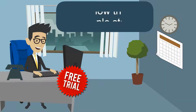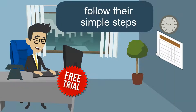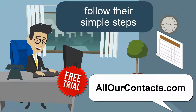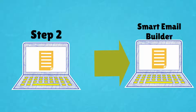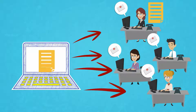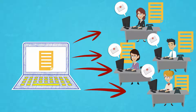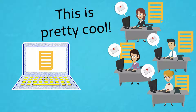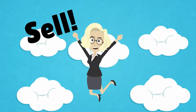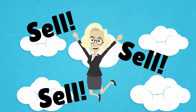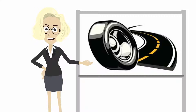Step 4: Importing your emails to Campaigner. Now it's time to import the email list you received from AllOurContacts into your Campaigner account. Once you start your free trial with Campaigner, follow their simple steps to import the email list you received from AllOurContacts.com. Next, copy the custom email template you created from Step 2 and paste it into Campaigner's Smart Email Builder. With Campaigner, you can import and send to your entire list of email buyers at once.